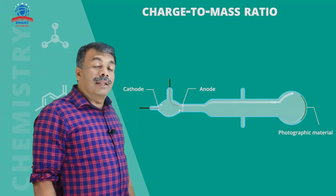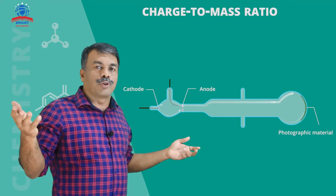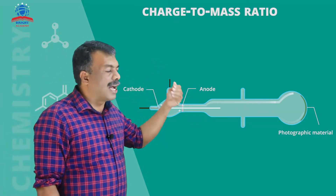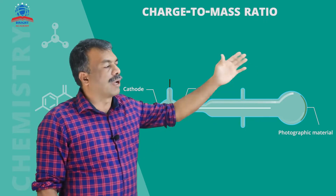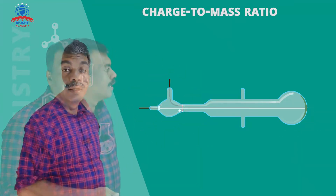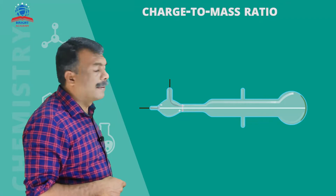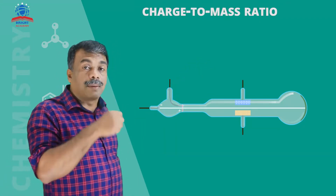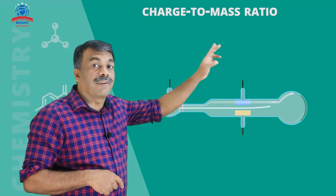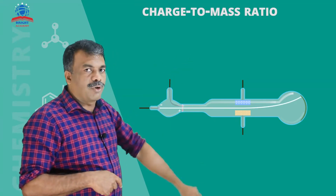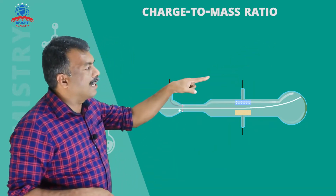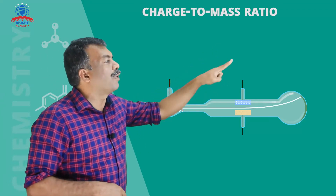At high voltage and low pressure, cathode rays are emitted from the cathode. When we bring an electric field, there should be some deflection of these cathode rays.